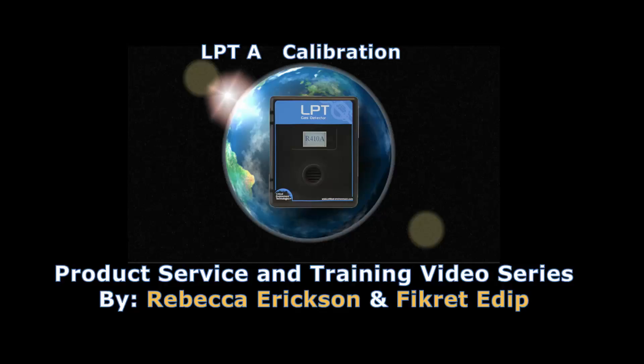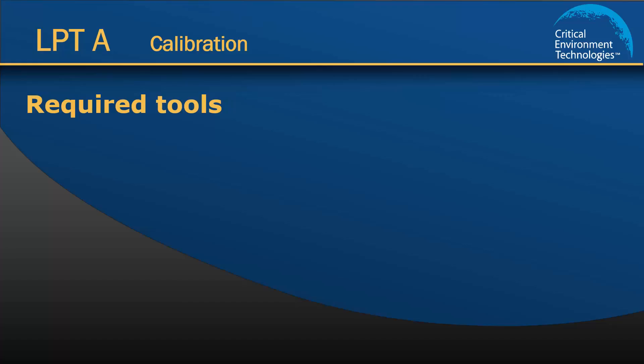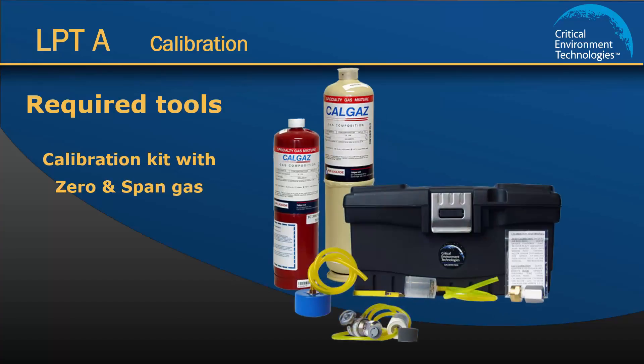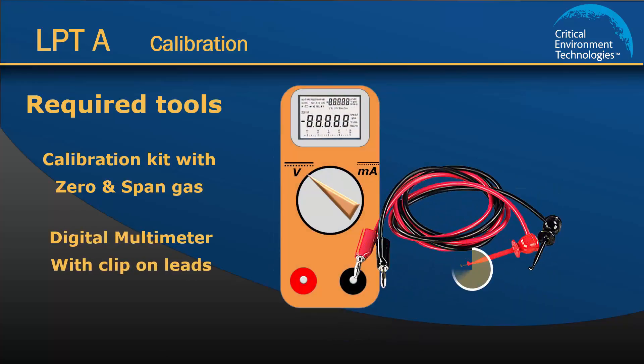To calibrate the LPTA you will need a calibration kit, gas cylinders with a sufficient amount, correct concentration and type of gas, and a volt meter with hook-on leads.